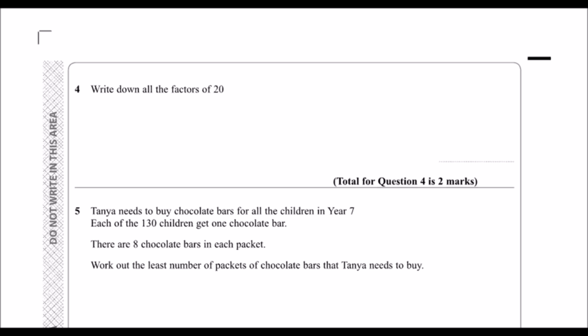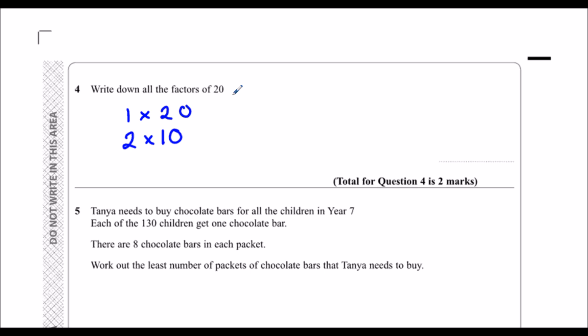Question four says: write down all the factors of 20 — so that's all the numbers that multiply together to make 20. To get 20 I could do 1 times 20, so I'm starting with 1 and going up in order. 2 times 10. It's not in the three times table.